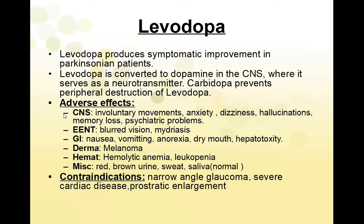Adverse effects of levodopa: in the CNS — involuntary movements, anxiety, dizziness, hallucinations, memory loss, and psychiatric problems. In the eyes, ear, nose, and throat — blurred vision and mydriasis (dilation of the pupil). In the GI system — nausea, vomiting, constipation, anorexia, dry mouth, and hepatotoxicity. In the skin — melanoma. Blood effects include hemolytic anemia or leukopenia (low WBC levels). Miscellaneously, the urine, sweat, and saliva may turn red-brown in color; patients should be informed this is normal while taking the medication.